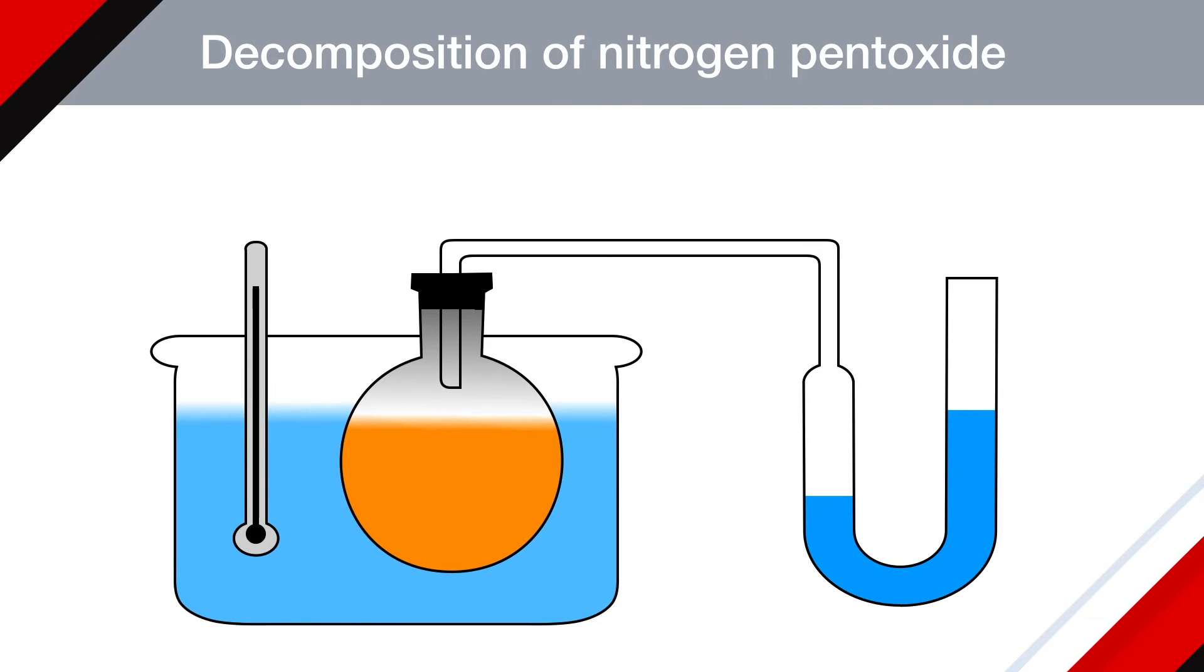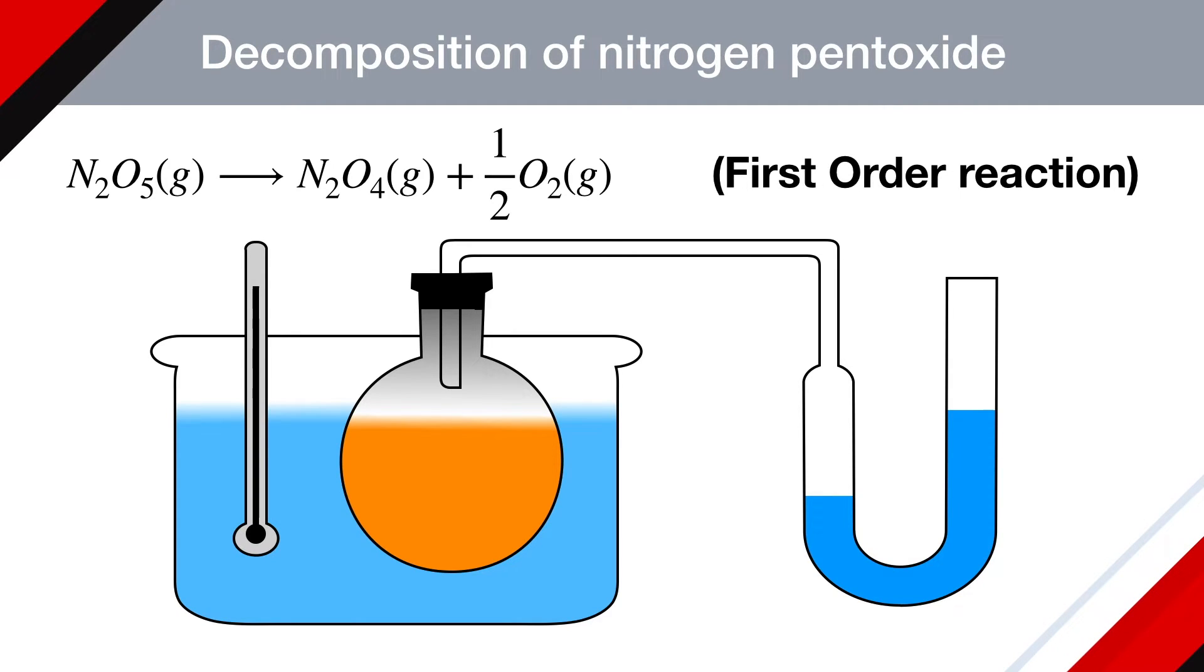According to the reaction, nitrogen pentoxide decomposes to form nitrogen tetraoxide and oxygen gas is liberated out. The reaction is carried out in a water bath to maintain constant temperature. Temperature is measured with a thermometer and in a round bottom flask, nitrogen pentoxide dissolved in carbon tetrachloride is kept.